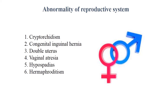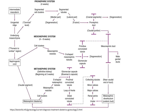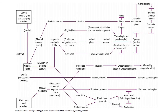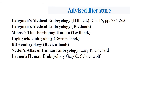During the development of the reproductive system there are many different anomalies, such as cryptorchidism, double uterus, vaginal atresia, and others. The next several slides are a summary of all the information discussed. Also included is the recommended literature which you can read and which was used during the preparation of this presentation. Good luck — see you at the lesson.